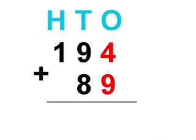First we're going to add the ones column, which is 4 plus 9. It equals 13. You put the 3 in the ones column and carry out the tens to the tens column.